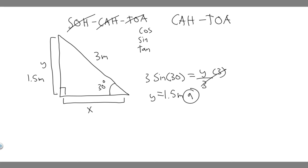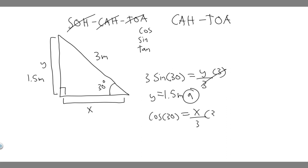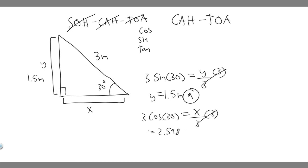I'm just going to use cosine — adjacent over hypotenuse. We'll take the cosine of our angle, which is 30, and set it equal to A, the adjacent side which we denote by x, over the hypotenuse which is 3. To solve for x, multiply both sides by 3: x equals 3 times the cosine of 30. Go ahead and do that — 3 times cosine of 30 — and you'll get 2.598 meters.